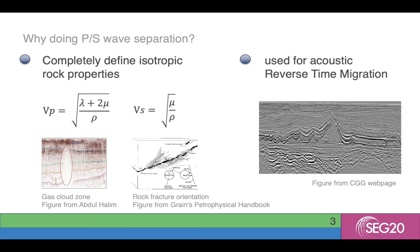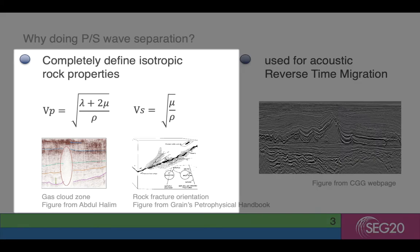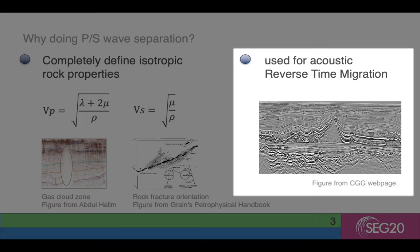Why do we do PS wave separation? We know that P and S velocity carry different seismic attributes of the subsurface. Separating P and S waves leads to a complete description of underground rock properties, which helps us know the reservoir better. For example, many studies have shown that information extracted from separated S waves helps to find gas clouds and rock fracture orientations. PS wave separation is also an essential part of reverse time migration.